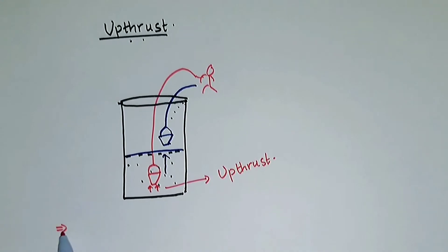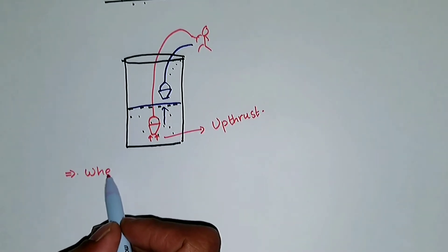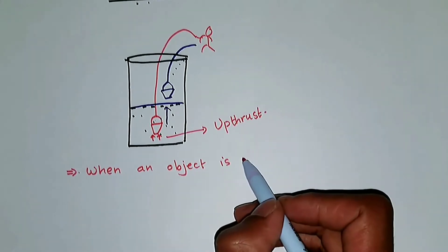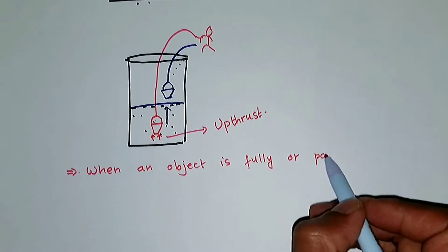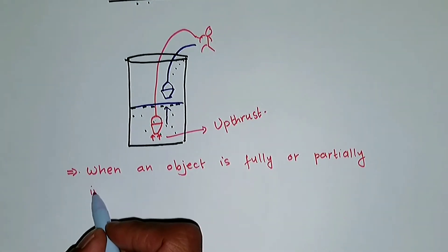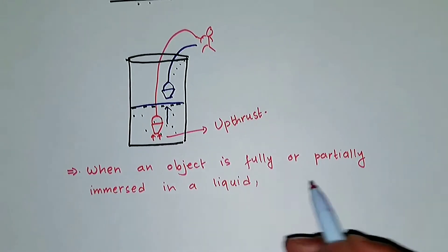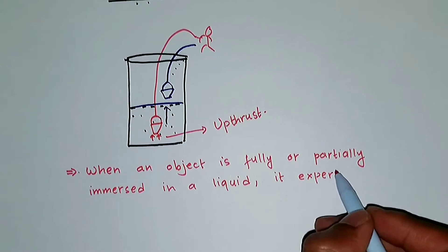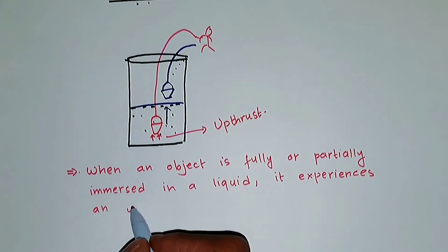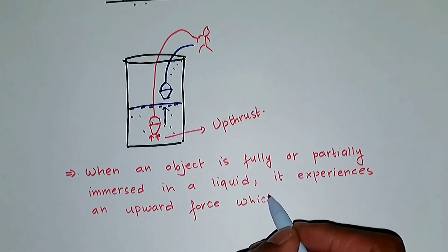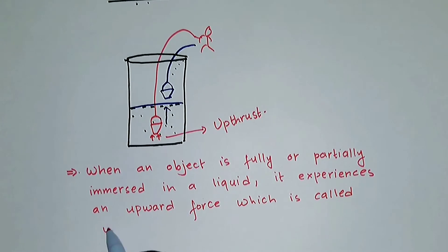Now, this upward force that is being applied by water on this bucket — this upward force is upthrust. That's it. You define upthrust as: when an object is fully or partially immersed in a liquid, it experiences an upward force, and that force is called upthrust.